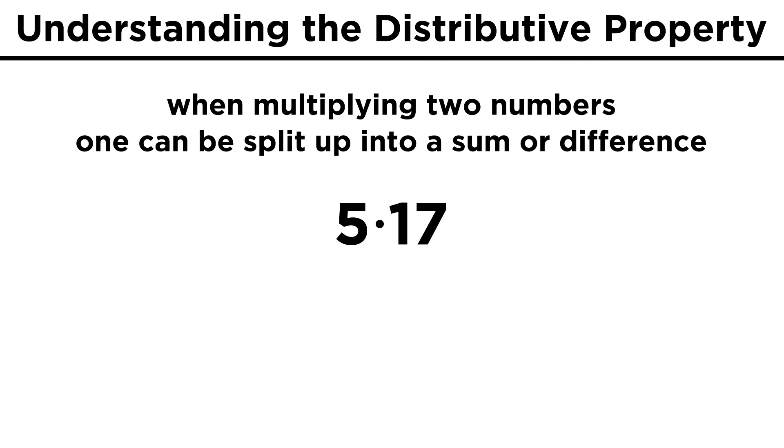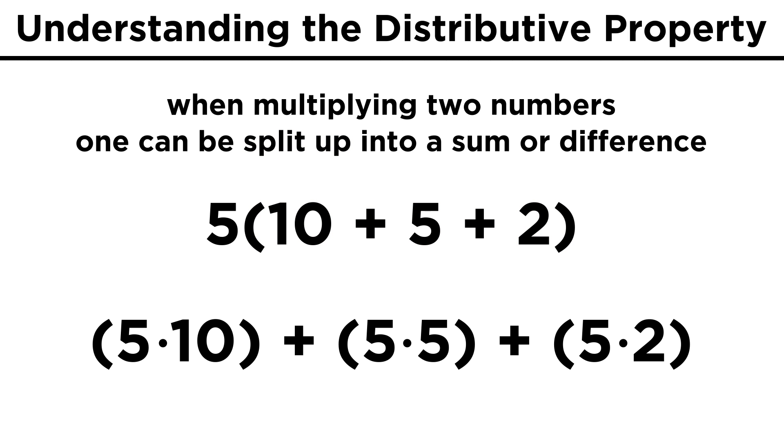Let's say we have five times seventeen. If we don't want to write down a calculation, we can easily do this in our heads if we split seventeen up into ten plus five plus two. Now we can distribute the five across the sum, and rewrite this as five times ten, plus five times five, plus five times two. These can be done easily in your head, and we get fifty plus twenty-five plus ten, and that's eighty-five.